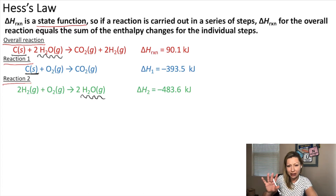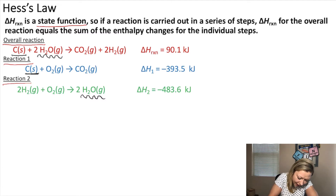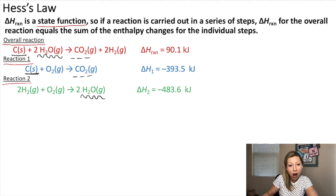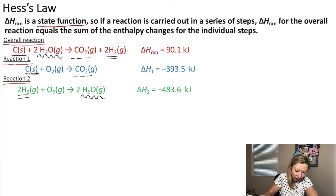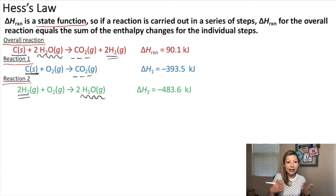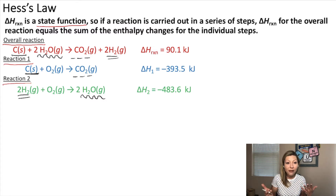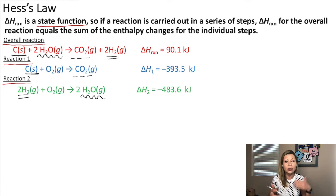Let's look at the next reactant in the overall reaction: water. We do have water in reaction two, but it is a product there. It's on the wrong side because in the overall reaction it's on the reactant side. Now looking at the products, we have CO₂ — also on the product side in reaction one. And we have H₂ gas, which is also in reaction two but on the reactant side — the wrong side. So the first step is to reverse reaction two.